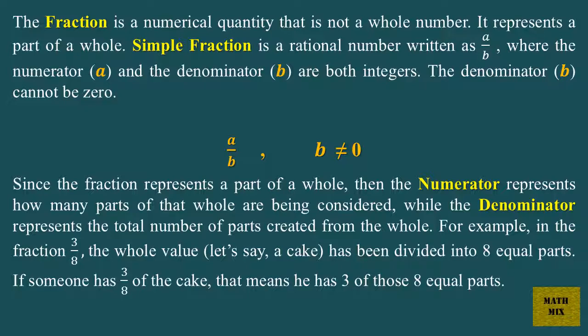A simple fraction is a rational number written as A over B, where the numerator A and the denominator B are both integers. The denominator B cannot be zero.